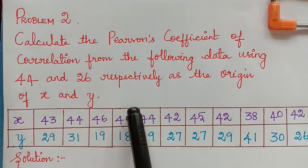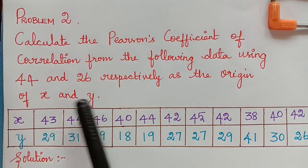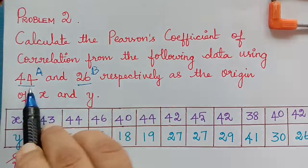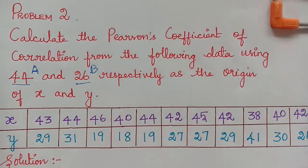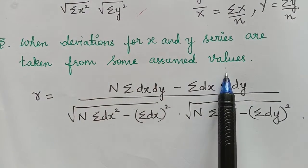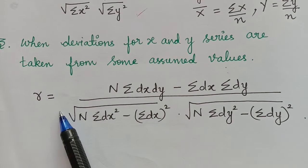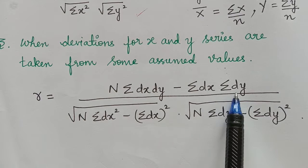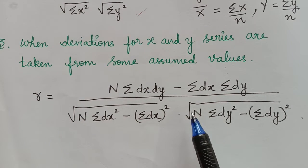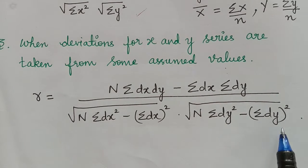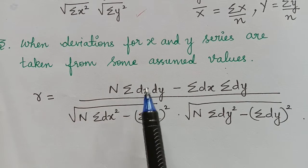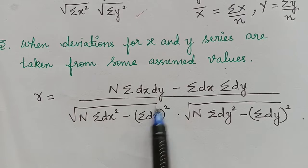For this, we have to use the deviation method where the deviation is measured from assumed mean. So this has to be considered as one assumed mean capital A and this as another assumed mean capital B. We have to solve this problem by using this formula. When deviations of x and y series are taken from some assumed values, the correlation coefficient R will be equal to N·Σdx·dy − Σdx·Σdy, divided by the square root of [N·Σdx² − (Σdx)²] multiplied with the square root of [N·Σdy² − (Σdy)²]. Here, capital N represents the number of observations, dx represents x minus capital A, and dy represents y minus capital B.